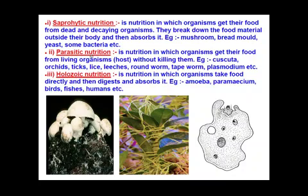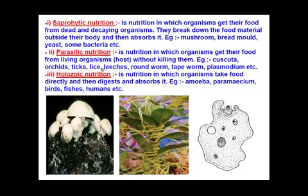The next type is parasitic nutrition. Here, organisms receive their food from living organisms called hosts, but they do not kill their host. They derive food from the host without killing it. Examples include Cuscuta, orchids, ticks, lice, leeches, roundworm, tapeworm, and Plasmodium.